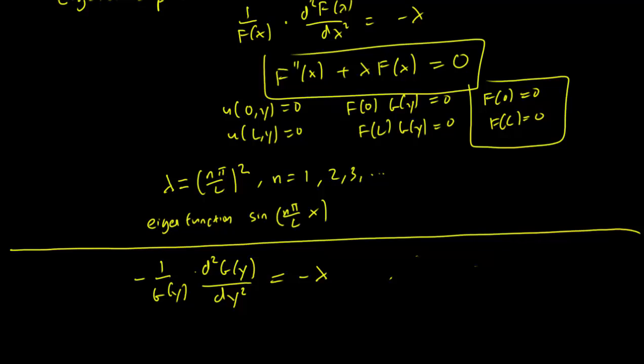So we have here that f(x) times g(h) equals 0. So either g(h) is 0, or f(x) must be 0 everywhere. But if f(x) is 0 everywhere, then u is 0 everywhere. So that's the trivial solution again. So we instead consider the initial condition g(h) equals 0.